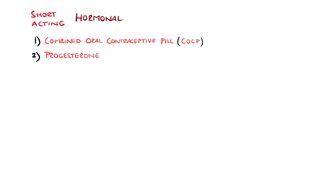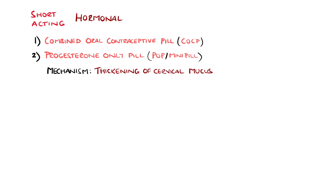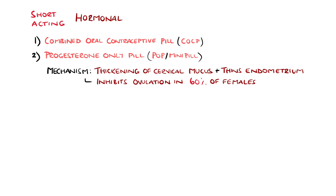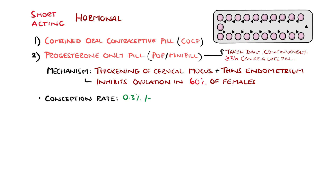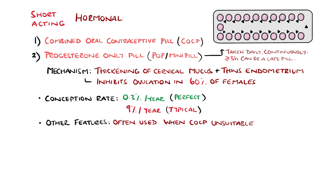Another short-term hormonal option is the progesterone-only pill or the mini-pill. This primarily works by thickening the cervical mucus to make it less permeable to sperm, and also has an effect on thinning the endometrium and preventing implantation. In around 60% of females, ovulation is inhibited. It is usually taken at the same time each day, continuously, with as little as 3 hours of delay being considered late with some preparations. It is commonly used in people who cannot use the combined pill, such as those with hypertension or breastfeeding, and has conception rates similar to the pill, so 0.3% per year with perfect use but more typically 9%.